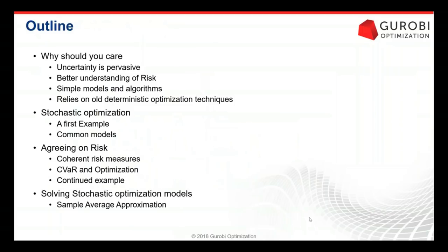Let's start with the overview — why should you care about stochastic optimization and risk? There are four main points: uncertainty is really pervasive in most situations we encounter; there have been big changes in the last 20 years regarding what we understand by risk and algorithms; and all of that relies on things most of us already know how to do, which is just solving deterministic optimization techniques.